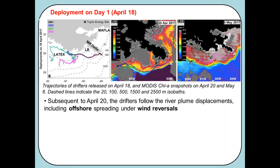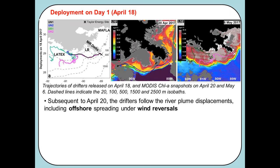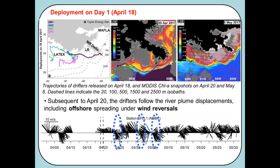Summarizing the drifter trajectories from April 18th: surface drifters went along the river plume edge and made landfall, while near-surface drifters stayed longer in the water and began extending offshore. Between April 20th and May 6th, the river plume extended offshore — the initial trajectory was at the edge, then in late April and early May wind reversals were associated with offshore excursions in the drifter trajectories.